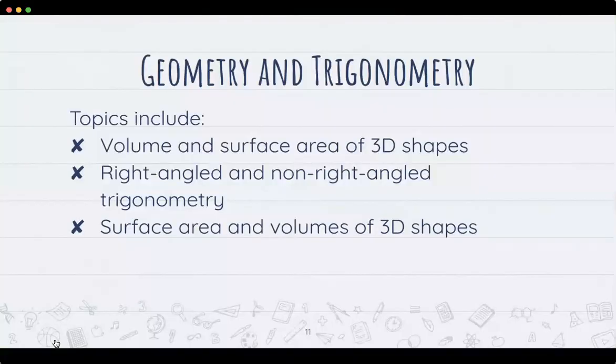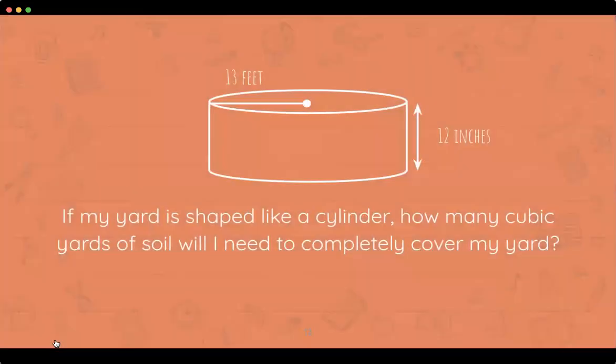Geometry and trigonometry includes volume and surface area of 3D shapes, and right-angled and non-right-angled trigonometry. Here's an example: if my yard is shaped like a cylinder with a 13-foot radius and 12 inches deep, how many cubic yards of soil will I need to completely cover my yard? So I need to figure out how much soil to order from my landscapers to fill my yard up.